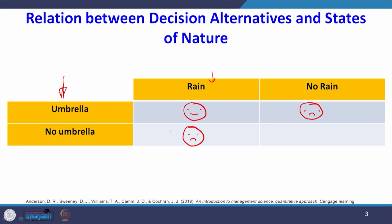If there is no umbrella and at the same time there is no rain, what will be your state of mind? You will be very happy. So this rain and no rain is nothing but the states of nature. Carrying an umbrella or not carrying an umbrella is called your decision alternative. The combination of these two is nothing but your payoff.